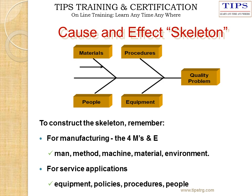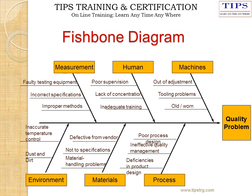To construct the diagram, remember: for manufacturing applications use the 4Ms and 1E — Man, Method, Machine, Material, and Environment. For service applications, consider Equipment, Policies, Procedure, and People as contributors. An example of a Fish Bone Diagram for a quality problem is provided.